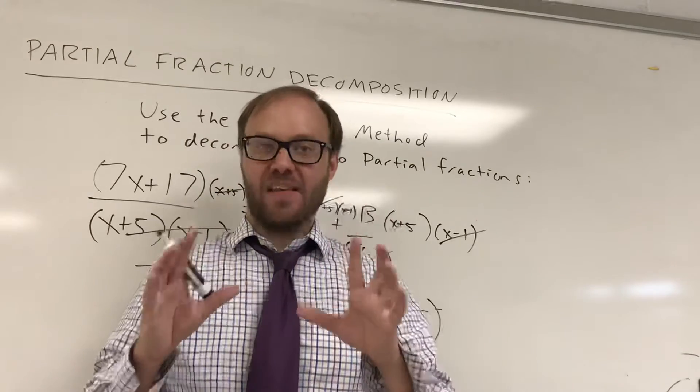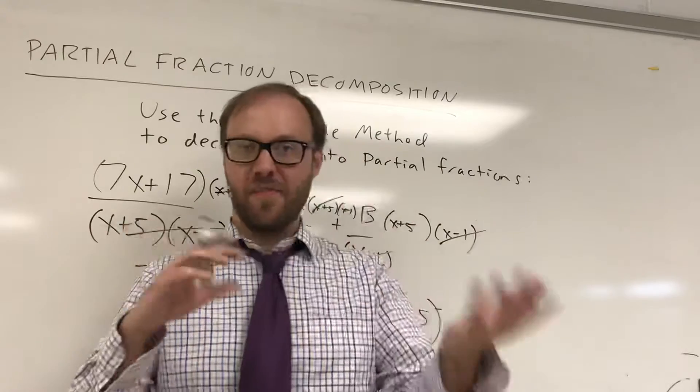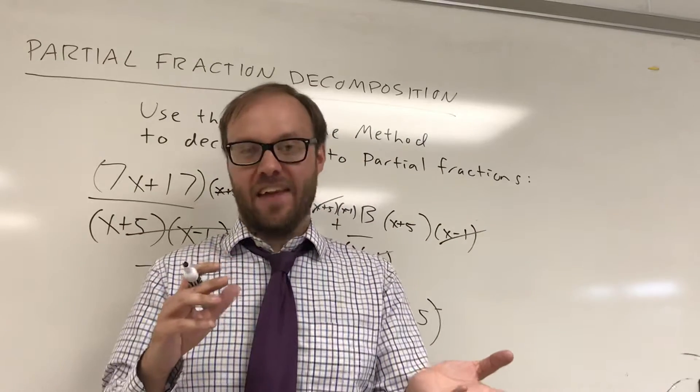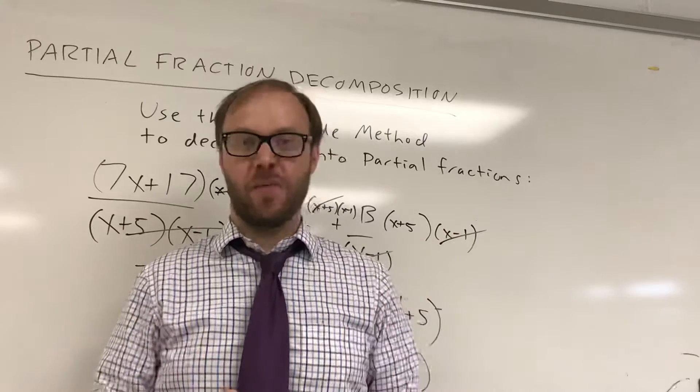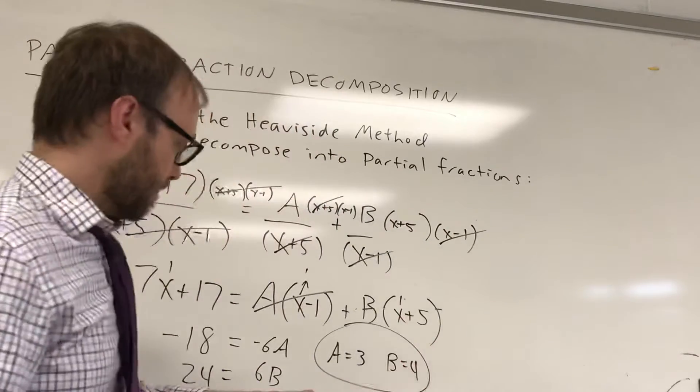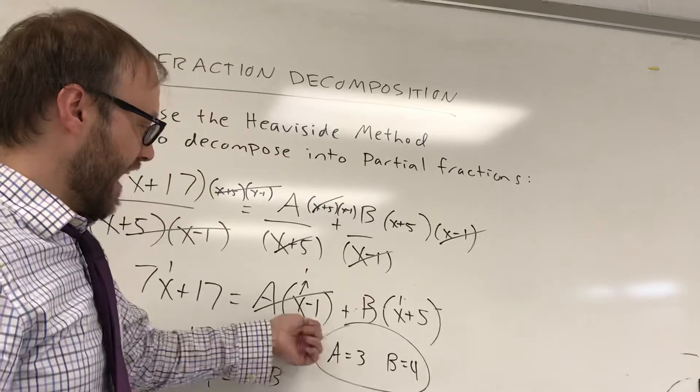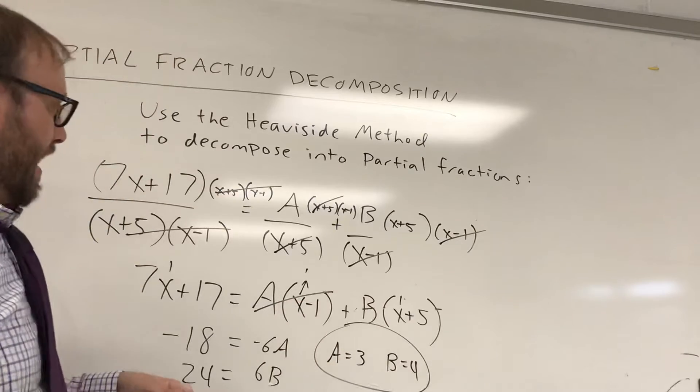That's actually not Heaviside's cover-up method. It's just making the point that you can put in whatever value you want for x. And if you do it strategically, you can knock out a variable, and you can just make your life a lot easier. So Heaviside realized something. Remember that when you filled in 0, it knocked out one of these variables, and it left another variable.